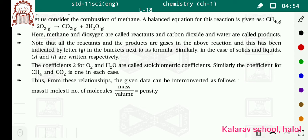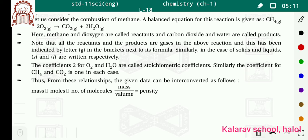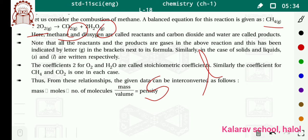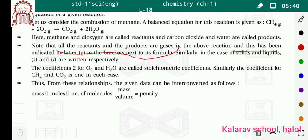Methane and dioxygen are called reactants, and carbon dioxide — CO2 — and water are called products. Note that all the reactants and products are in a gaseous state. In the above equation, CH4 is in gaseous form, O2 is in gaseous form, CO2 yahan pe G likha hua hai — matlab ki all reactants and products are in a gaseous state. Agar woh solid state mein hai toh hum bracket mein S likhenge; agar liquid state mein hai toh L likhenge.